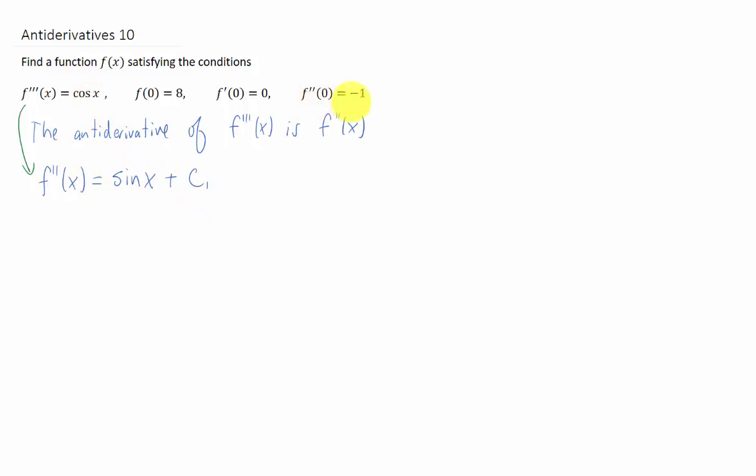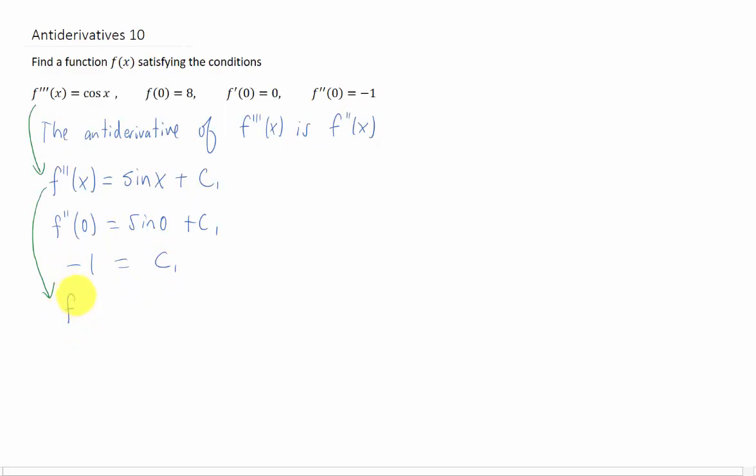Now, let's plug in this initial condition here. If we plug x equals 0 into f double prime, we get sine of 0 plus c1, which is just c1. Of course, we know that f double prime of 0 has to be negative 1, so that tells us that c1 has to be negative 1. So our new function for f double prime of x is sine of x minus 1.